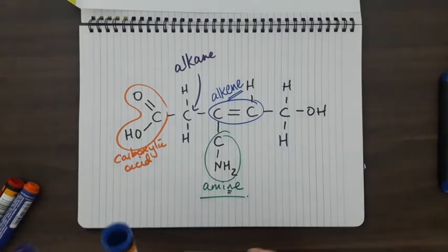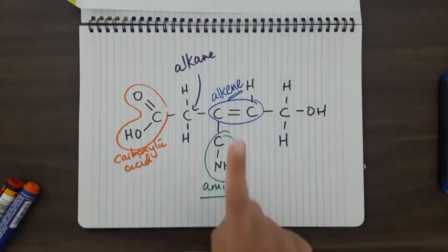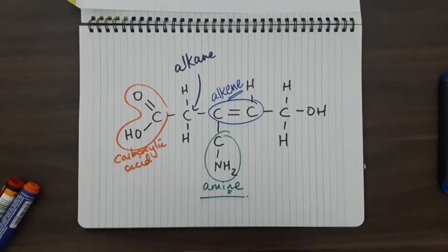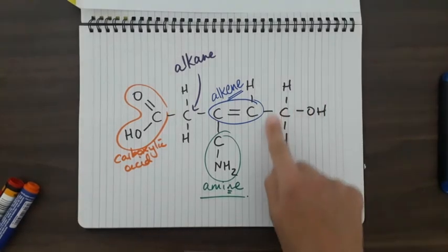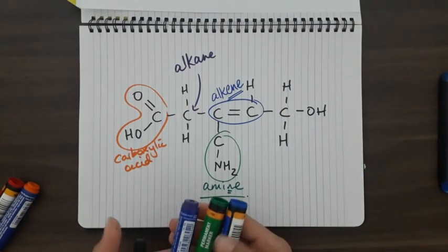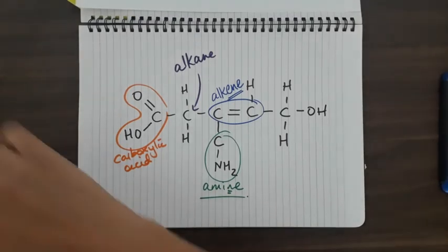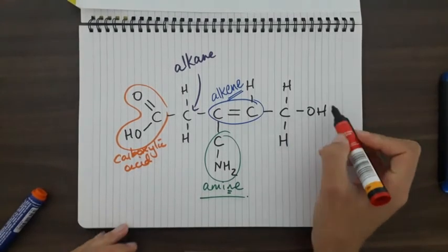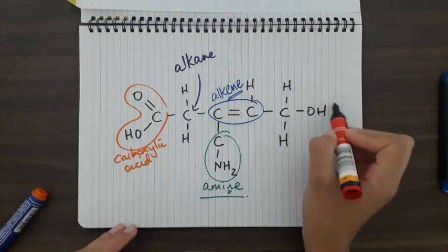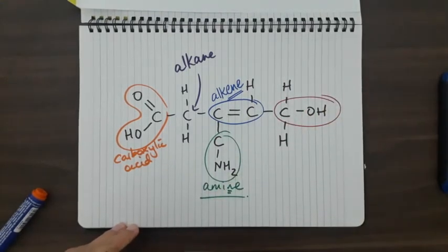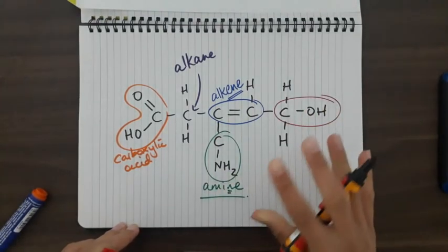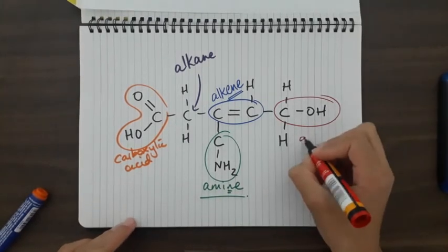Triple bonds are alkynes with a Y, but they're not very common. We usually get alkenes. And here we've got an OH group with nothing else really next to it - that is an alcohol.